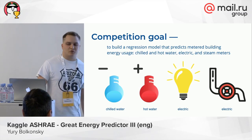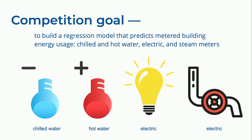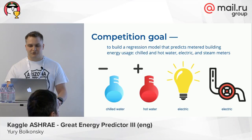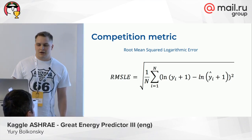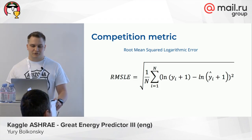The competition goal was a regression problem where we need to predict four main meters: chilled water, hot water, electric, and steam meters. The competition metric was root-mean-square logarithmic error, which is the same as the usual root-mean-square error but using the logarithm.